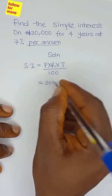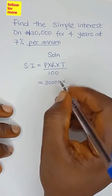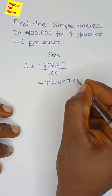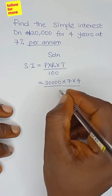So we have ₦30,000 multiplied by the rate of 7%, multiplied by the duration of 4 years, all over 100.